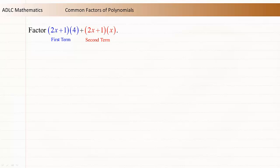As such, each product can be thought of as a term of the polynomial. Notice that each term contains the factor 2x plus 1.